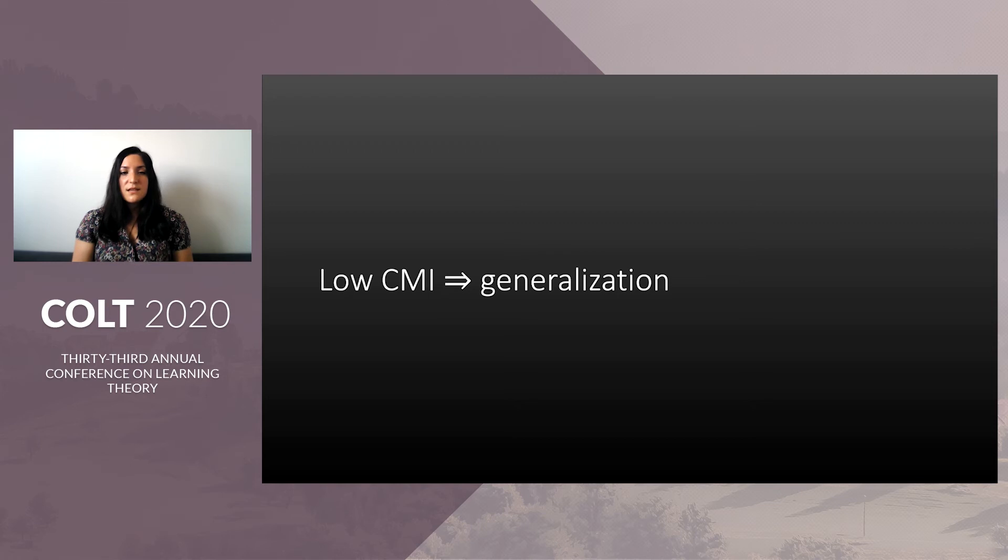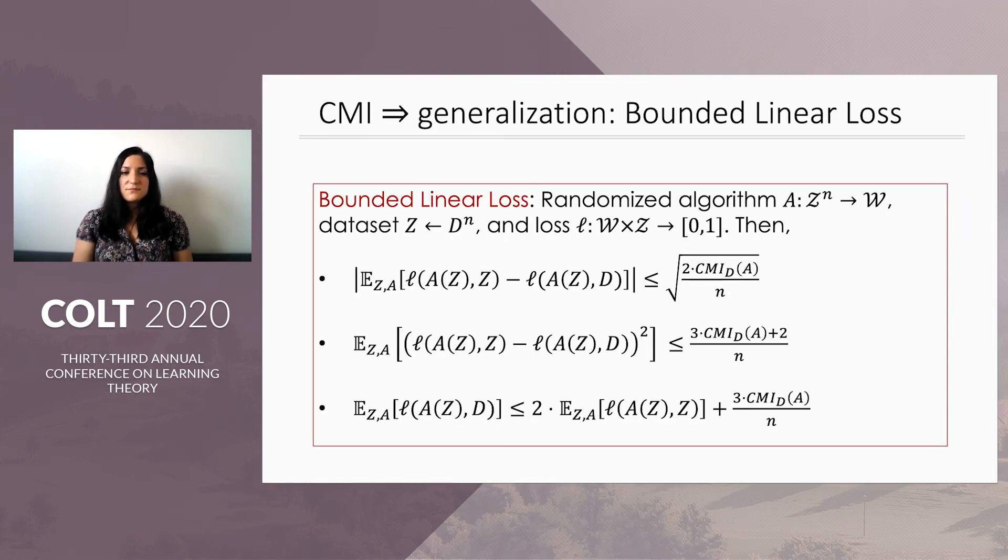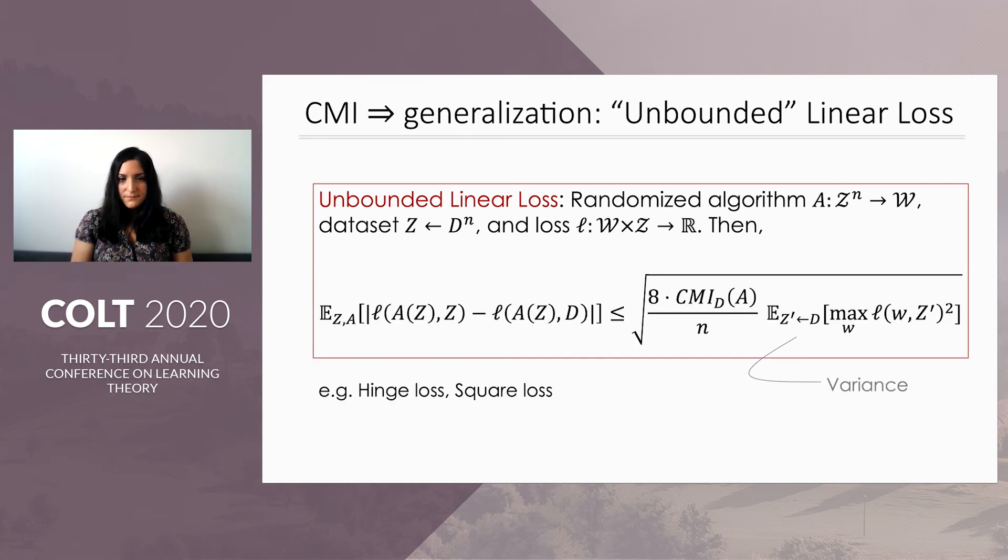Now, the key property, as we said, of CMI is that it implies generalization. And since there's no one form of generalization guarantee, we prove different bounds which also demonstrate the versatility of the CMI framework. First, we prove bounds for bounded linear losses, that is, losses that have range in zero to one. We prove that the expected difference of the empirical and the true loss is at most the square root of CMI over n, that the square difference is at most CMI over n, and finally we prove a relative and additive bound that can be useful when the expected empirical loss is zero, so we're in the realizable setting, or if it's very small.